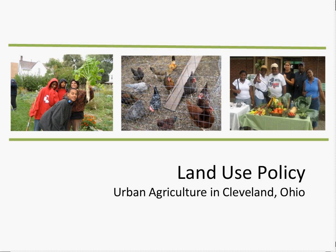Morgan Sagert has been a program specialist with the Ohio State University Extension since 2005. She provides training and technical assistance to urban gardens throughout greater Cleveland. As co-coordinator of the Cleveland-Cuyahoga County Food Policy Coalition, Morgan works with diverse stakeholders to inform policies related to urban agriculture and local food systems. She's going to share some of her work from Cleveland.